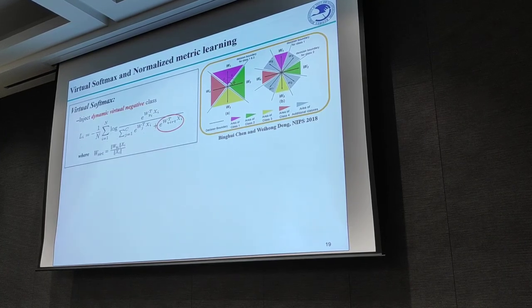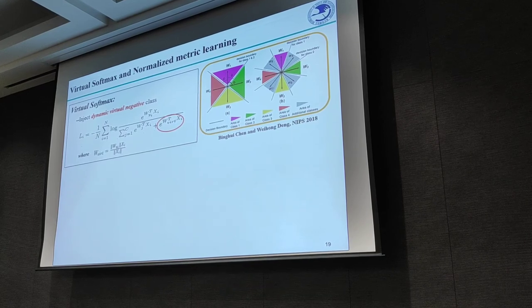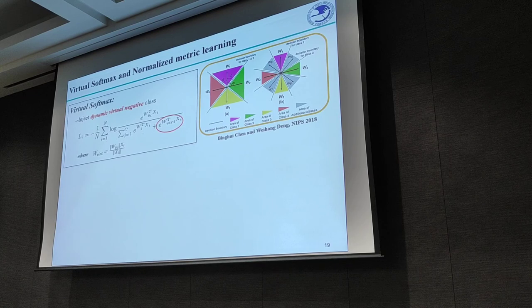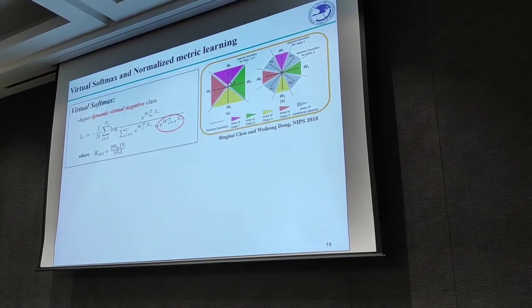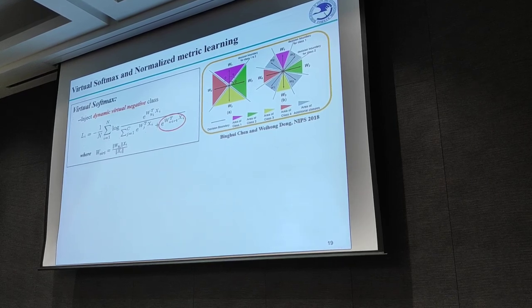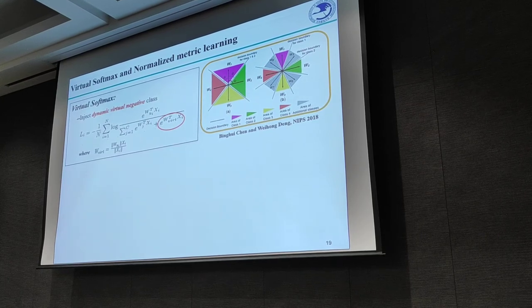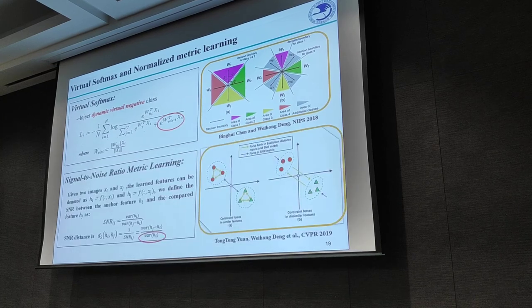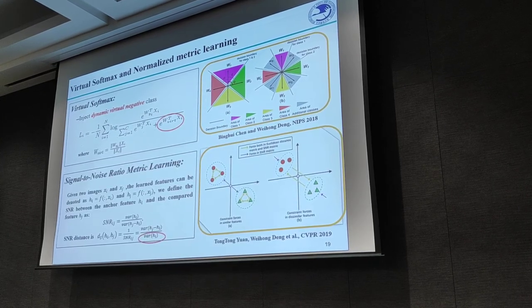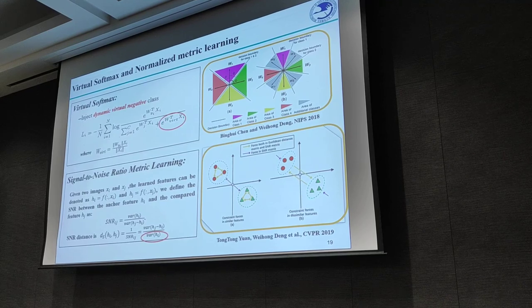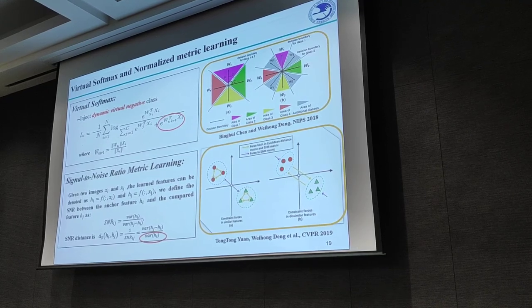The most straightforward way to reduce uncertainty is to compress the intra-class scatter in the feature space. We propose adding a positive term in the denominator of the softmax loss function, equivalent to inserting virtual classes 1, 2, 3, 4, to enlarge the inter-class margin. For metric learning, we also demonstrate that a similarly normalized norm of the output samples can improve the separability of the feature embedding.